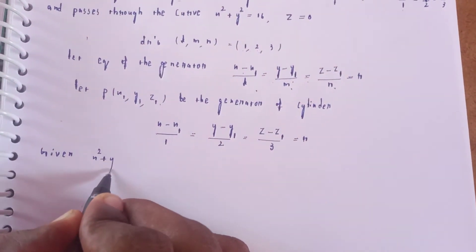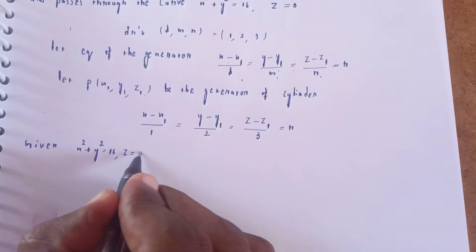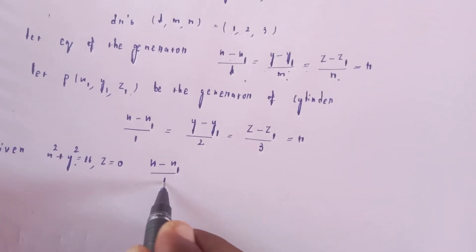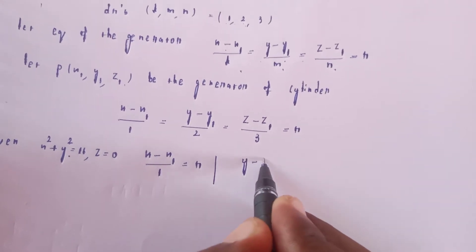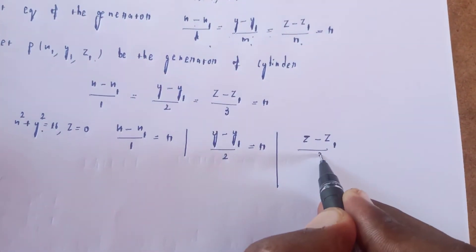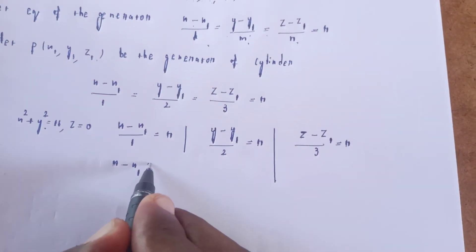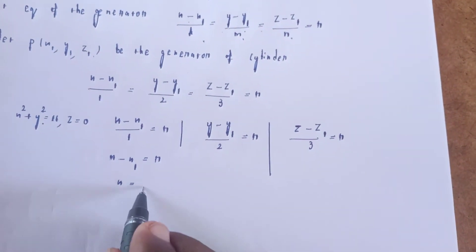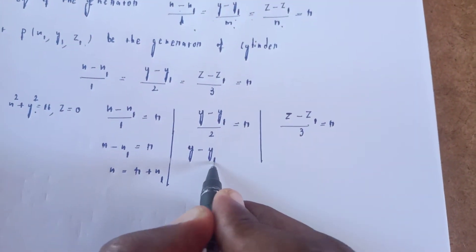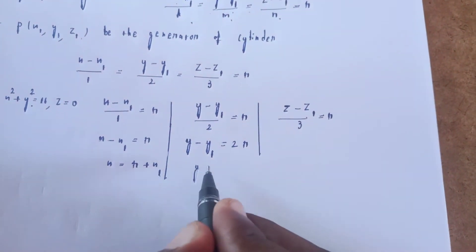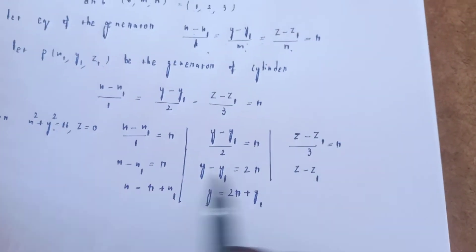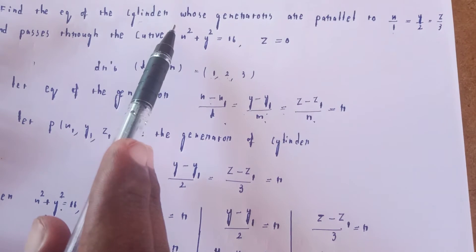Now we need to find x, y, z. From x minus x₁ = r, we get x = r + x₁. From y minus y₁ = 2r, we get y = 2r + y₁.